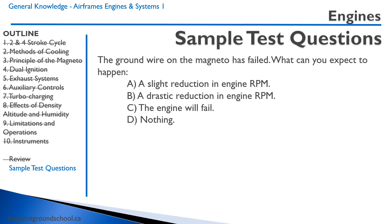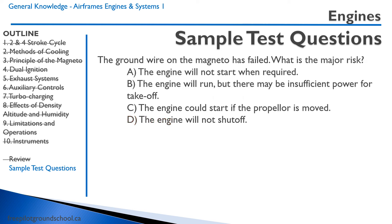The ground wire on the magneto has failed — what can you expect to happen? Recall that the ground wire is what shuts the magneto off. If you're flying along and the ground wire fails, nothing will happen during flight. However, you must be very careful: once you shut the magnetos off, they will still be live, and if somebody turns the propeller, there's a chance the engine will fire. The major risk is that the engine could start if the propeller is moved. Note that we use the mixture at idle cutoff to shut the engine off, so the engine will shut down normally — but the magneto remains live and dangerous on the ground.